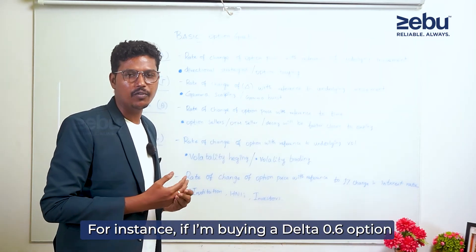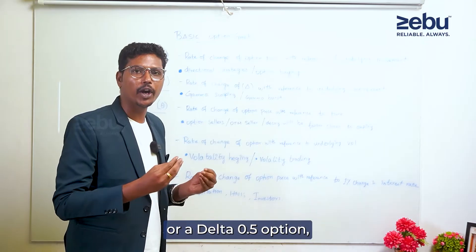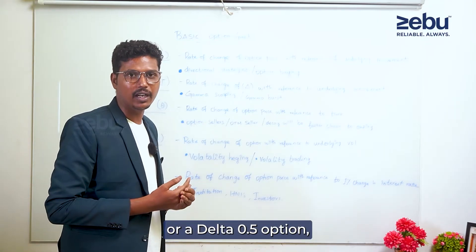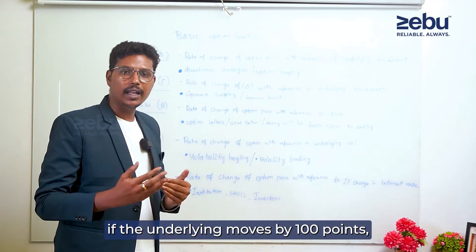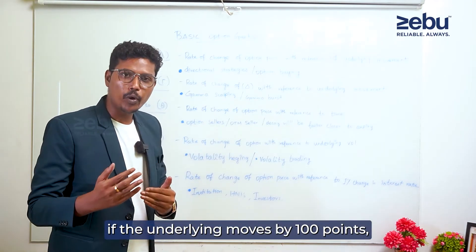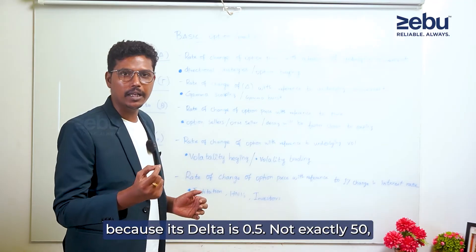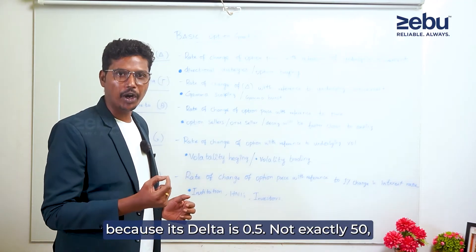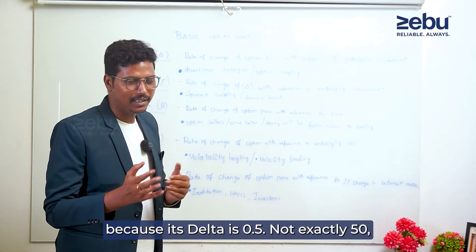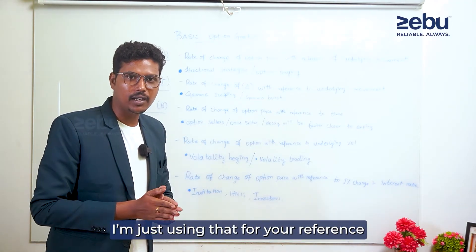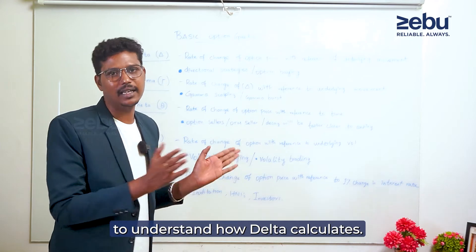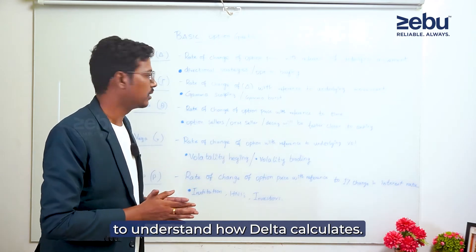It measures how much the option price will move. If the underlying moves 100 points, it will be 50% and delta is 0.5. If you look at the reference, that will help calculate delta.